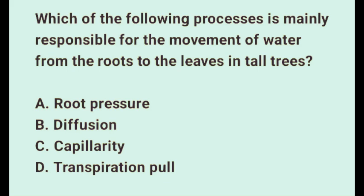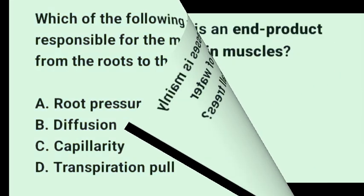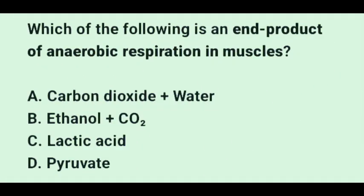Transpiration pull works as water evaporates from stomata and leaves, creating a negative pressure — a suction force — that pulls water molecules upward in a continuous column through the xylem, due to cohesion (water-to-water attraction) and adhesion (water-to-wall attraction). The cohesion-tension theory explains this process. It is the major force responsible for water movement in tall trees.